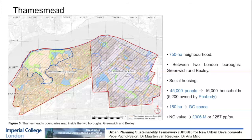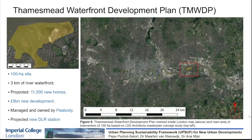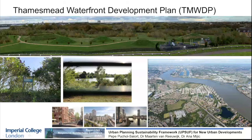Thamesmith was envisaged at the end of the 1960s as a very prolific city of the future, but nowadays it is in a very deteriorated state. One of the biggest development plans happening inside Thamesmith is the Thamesmith Waterfront Development Plan. This is currently a 100-hectare site full of blue and green space, with three kilometres of river waterfront, two lakes, and a network of canals. It is projected to build around 1,000 new homes in an 8-billion-pound new development, fully managed and owned by Peabody, and will include a new DLR station connecting with London's centre. Currently the site is fenced, so it cannot be enjoyed by citizens, despite being full of blue and green space.